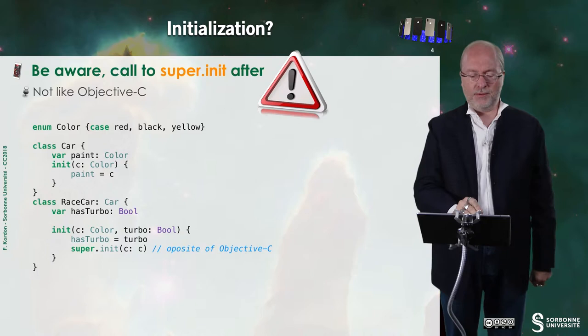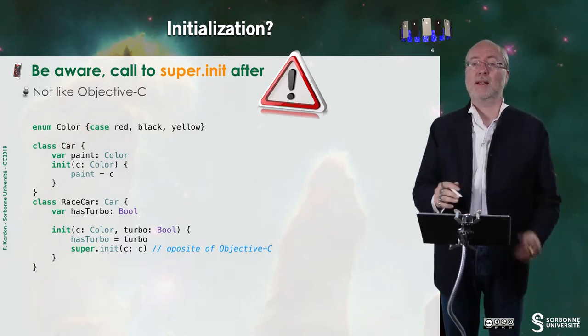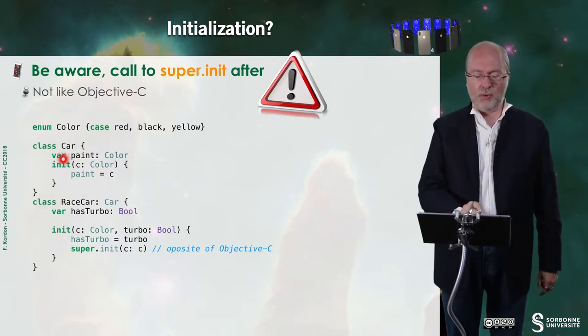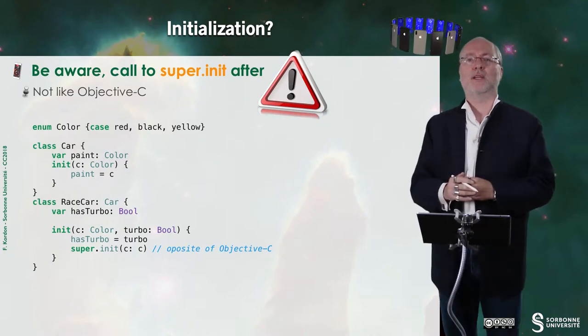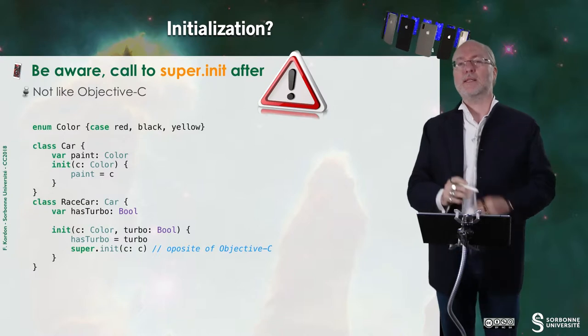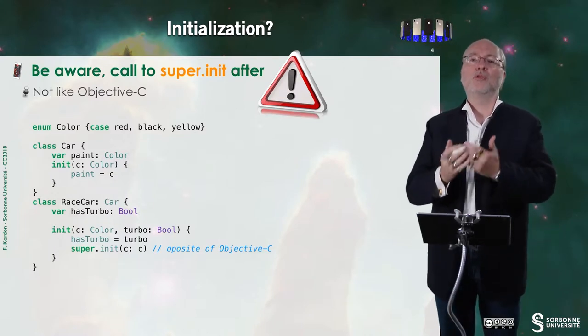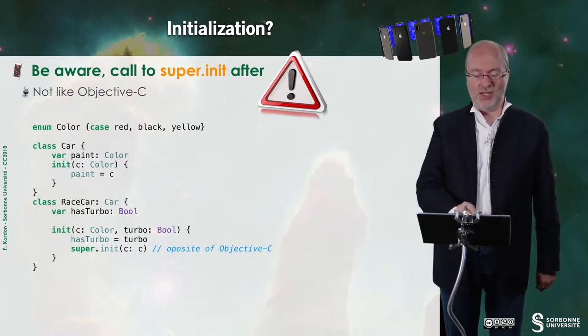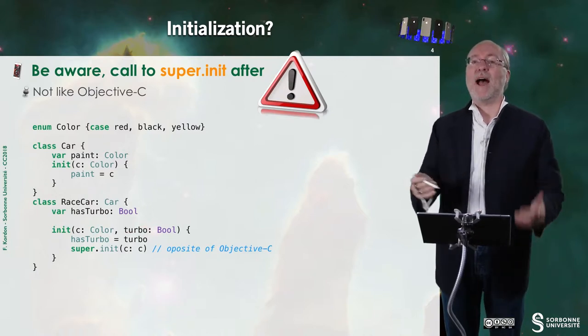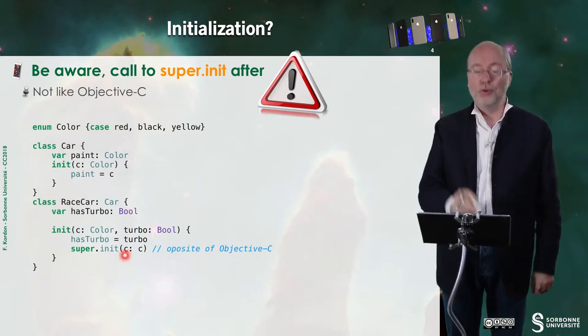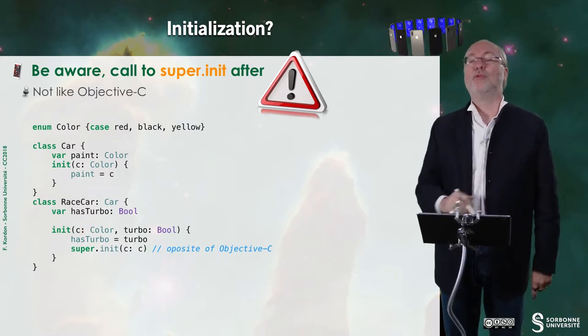So let's imagine here I have an enum type color. I have a first class called car that has an attribute properties called paint. And when I init it, I provide the color of this object. And I have here another class called raceCar that inherits from car and that just adds a Boolean as Turbo. And when I want to init this raceCar, I have an init with two parameters, C and Turbo. So here I initialize as Turbo first with the value of the parameter of init. And then I call the super init of car passing it the parameter C that is provided to the initializer of raceCar. So this is the opposite of Objective-C.